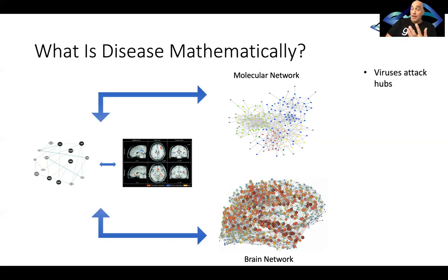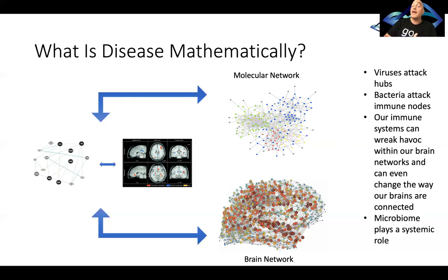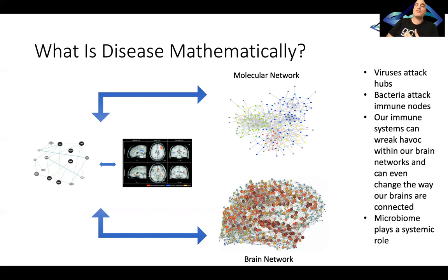Evolution knows this, because viruses attack hubs, bacteria attack immune nodes, and our immune system can wreak havoc within our brain networks and can even change the way our brains are connected. There's also this new layer coming about with our microbiome — the bacteria in our guts — which actually have a massive systemic role. They send us signals which affect the different networks in our body and are responsible for a lot of our health. A lot of the work we do at Netromark revolves around understanding networks and integrating all these different types of data.